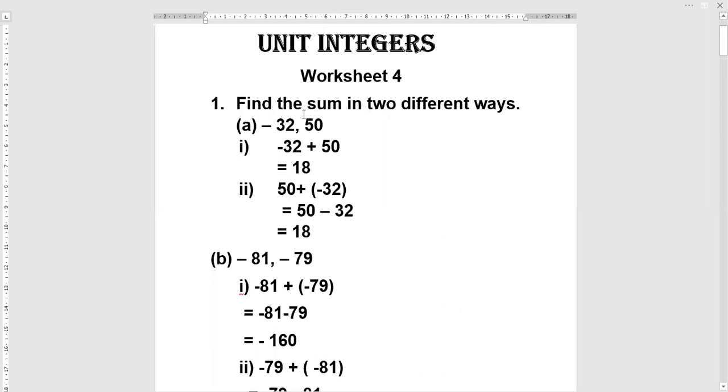We will solve them in two different ways by changing their order. First of all, I write it as minus 32 plus 50 equals minus 32 plus 50 equals 18. 50 is greater integer. It is positive, so answer is also positive integer.